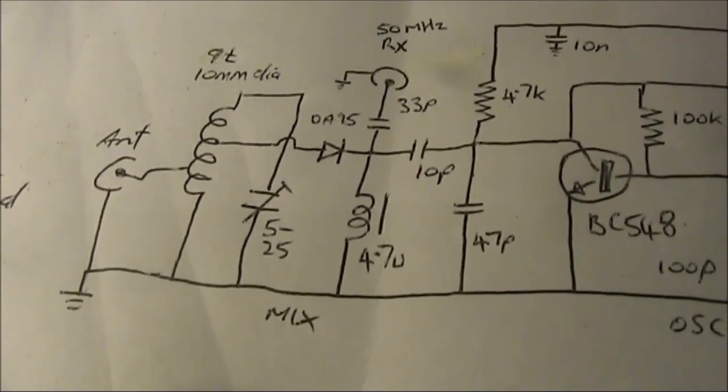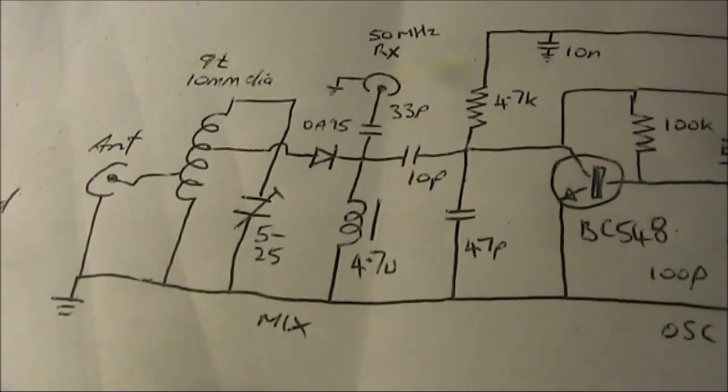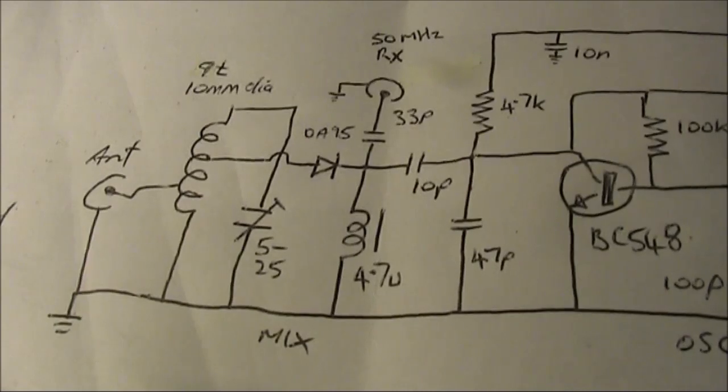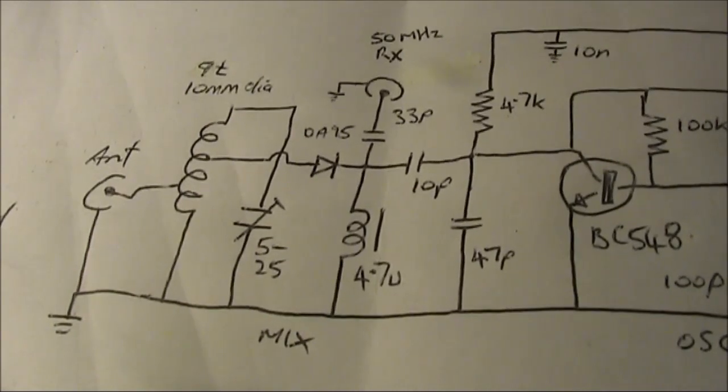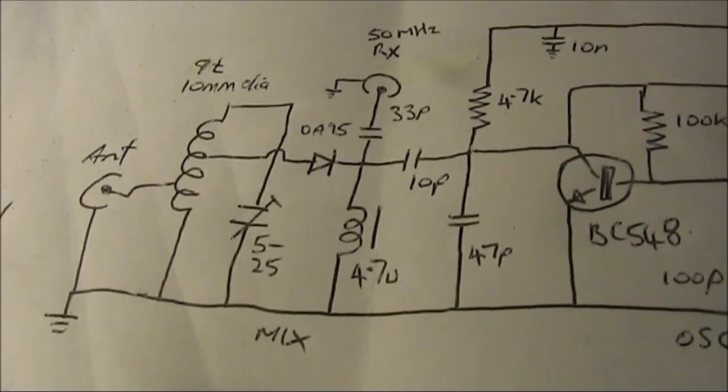If you don't have a 70MHz transmitter, then you could use what I described in the previous video, the harmonic generator, where you choose a frequency like 7MHz, and then 10 times that will be 70MHz, so you'll have a signal there.